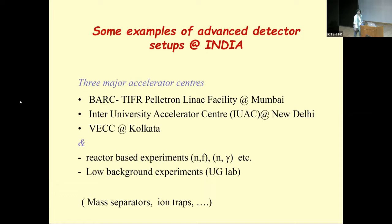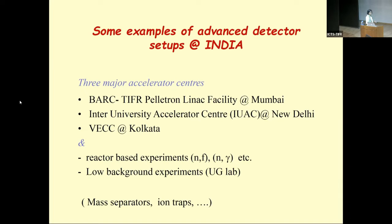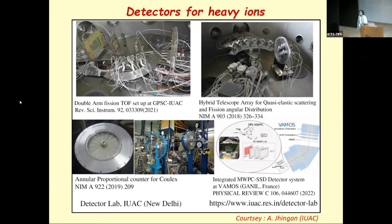There are three major accelerator centers for heavy ion studies in India: the Pelletron-Linac facility at BARC/TIFR in Mumbai, the Inter-University Accelerator Center in New Delhi — both with tandem accelerators (14 MV and 15 MV) followed by superconducting linear boosters — and the cyclotron at VECC Kolkata. There is also a move to set up an underground laboratory (UGLab), with prototype experiments already done at Jaduguda.